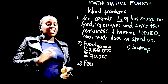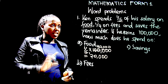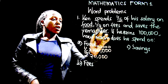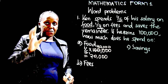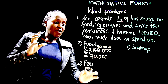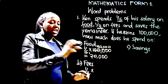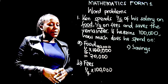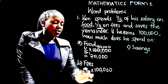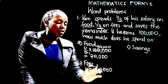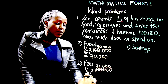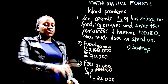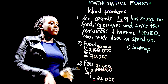Part b asks for the amount he spends on fees. A quarter of the salary goes to fees, meaning we multiply: a quarter of 100,000. 100,000 divided by 4 is 25,000, so 1 times 25,000 gives 25,000 shillings. Ken spends 25,000 shillings on school fees.